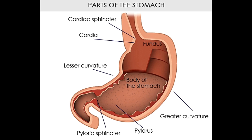The greater and lesser omentum are formed by two layers of peritoneum, one layer folded over itself. The presence of lymph nodes and immune cells in the greater omentum helps fight gastrointestinal infections. The greater omentum hangs down from the greater curvature of the stomach. The lesser omentum is attached to the stomach and the liver, and is continuous with the peritoneal layers of the stomach and duodenum, which combine at the lesser curvature. The stomach lies in front of the lesser sac.